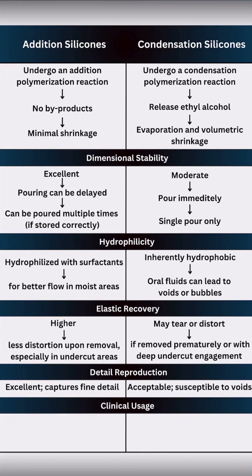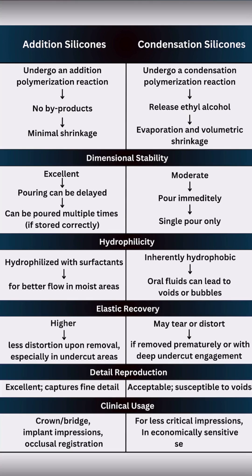Clinically, addition silicones are the material of choice for crowns, bridges, implant impressions, and occlusal registration. Condensation silicones are used for less critical impressions such as primary impressions, provisionals, and less demanding full denture impressions, especially in cost-sensitive situations.